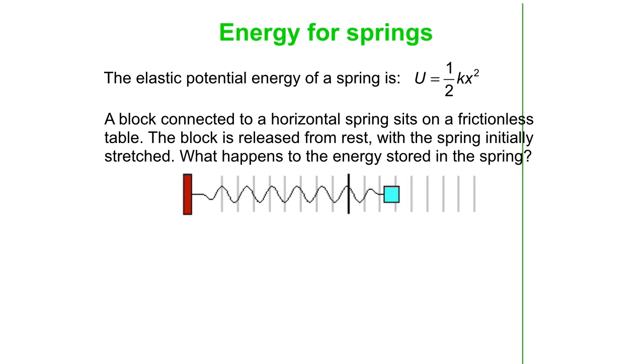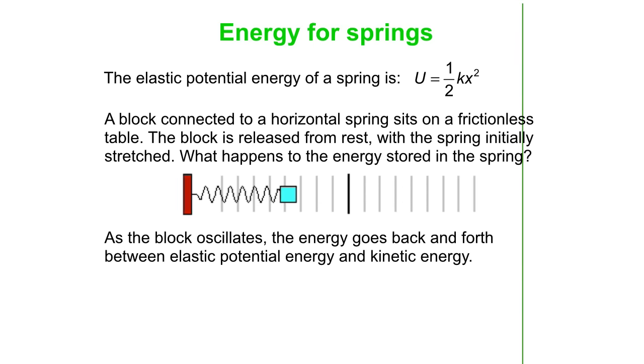Well, it starts out with elastic potential energy, turns into kinetic energy, and oscillates back and forth between potential and kinetic. It's not like a ball rolling up and down, kind of a bowl. So it goes back and forth between gravitational potential energy and kinetic. This time it's elastic potential energy and kinetic.